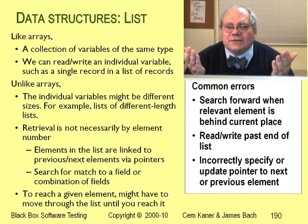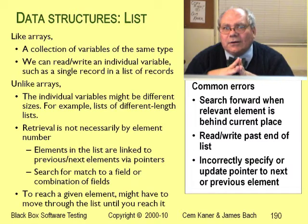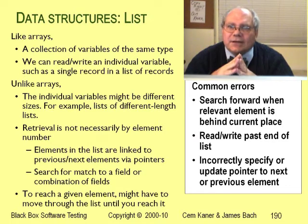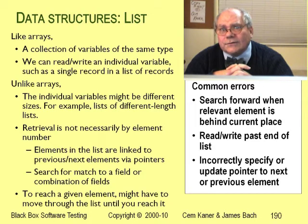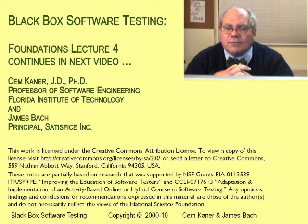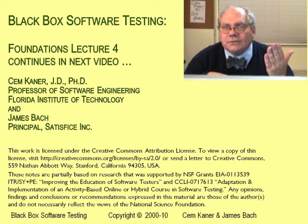So why do we need all these different types of data structures? When we want to store a collection of data, we want to be able to find it later — efficiently — and we want to be able to change it efficiently. Each type of data structure makes some types of searches easier and some types of changes easier. A structure that is very fast for some tasks can be painfully slow for others. Especially in real-time programs like games, and in programs that work with large amounts of memory, a lot of work goes into optimizing data structures to achieve the right trade-off between speed of the most important operations and the amount of space required in memory or on disk.